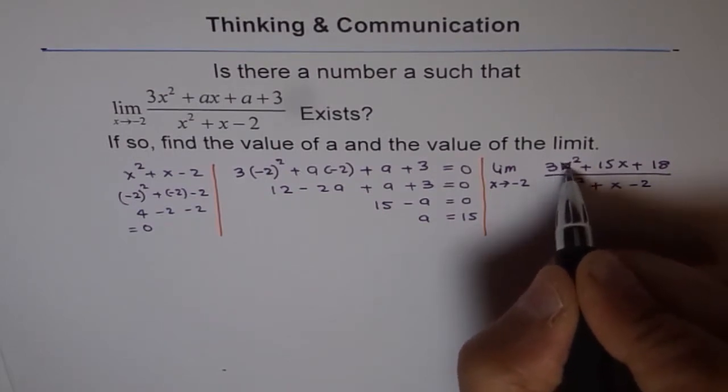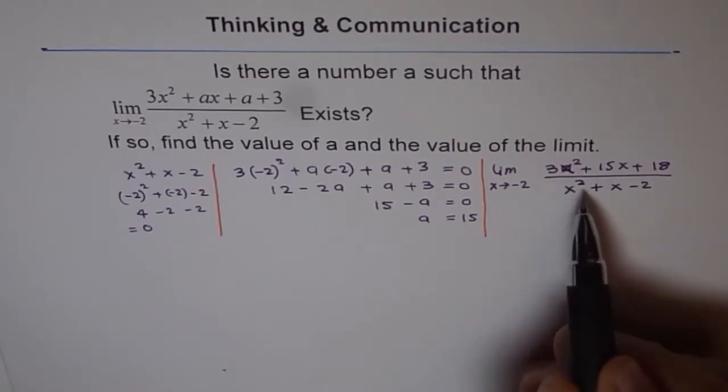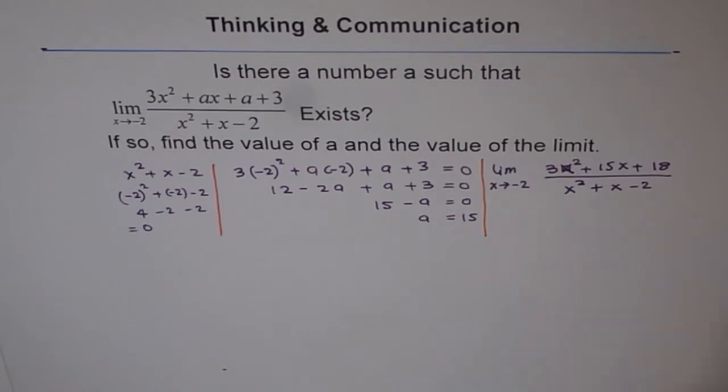So, the question now becomes 3x square plus 15x plus 18 divided by x square plus x minus 2 where limit we need to find that x approaches minus 2. So, that is a rational function. To find the limit of rational function, what should we do? We should factor it.